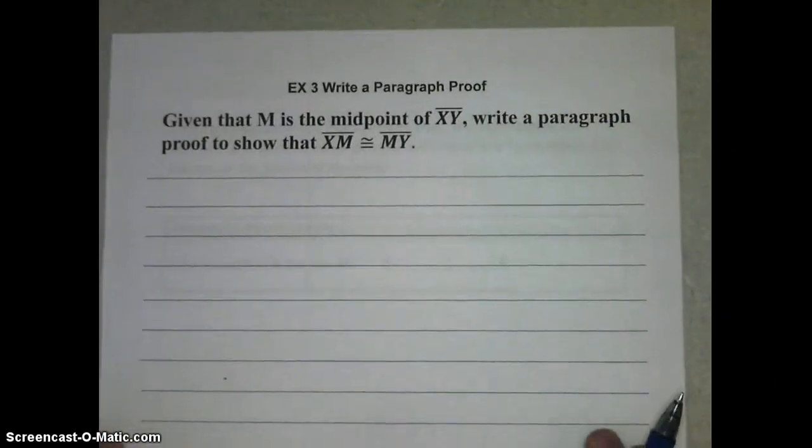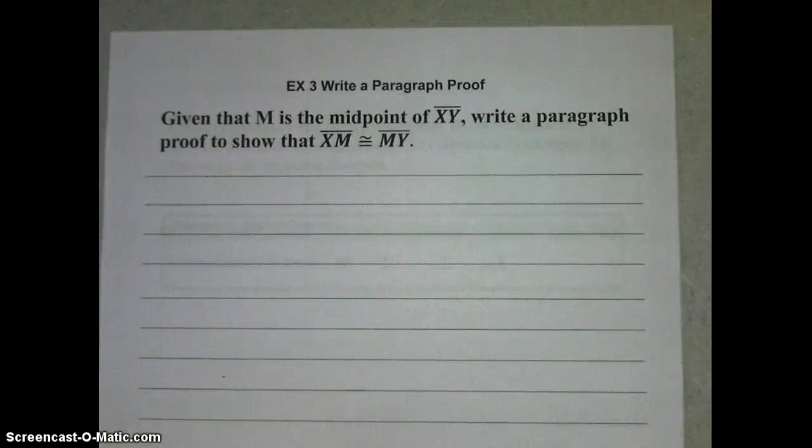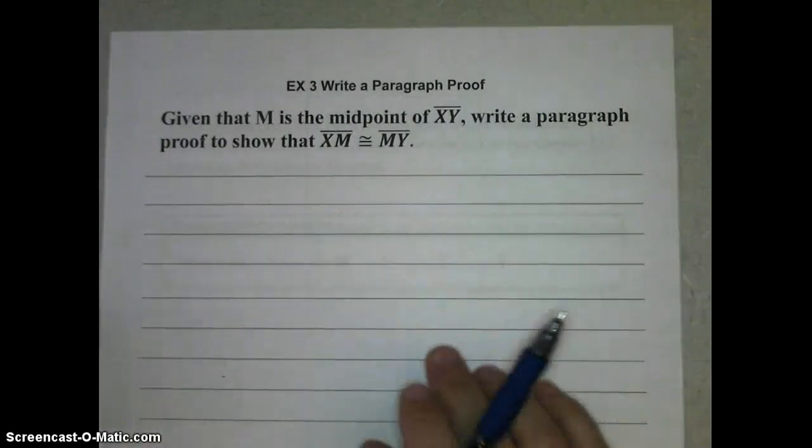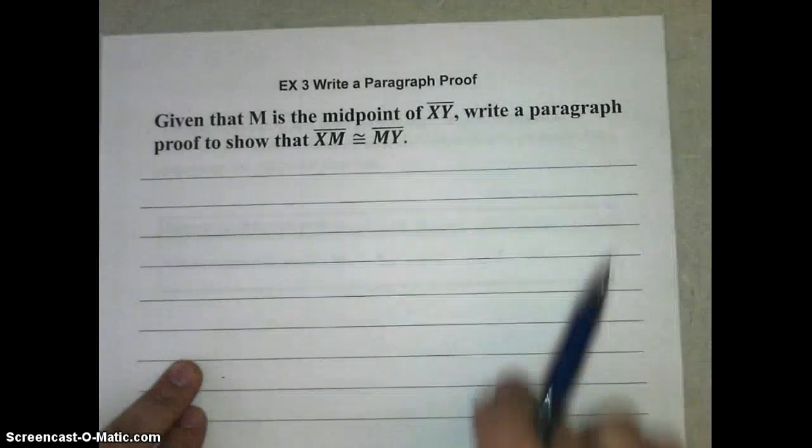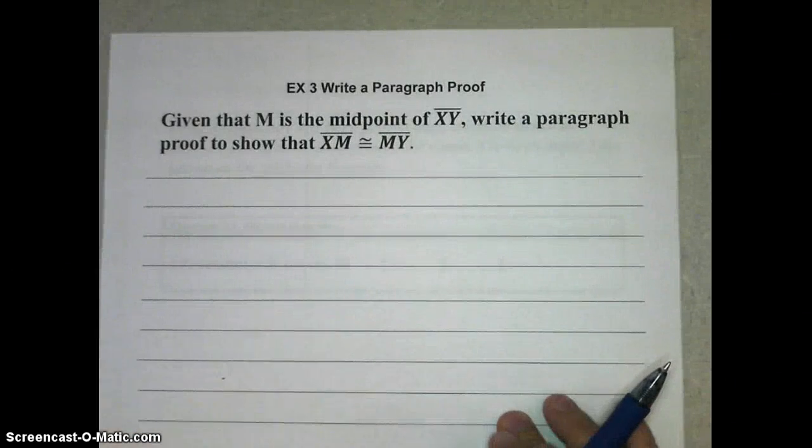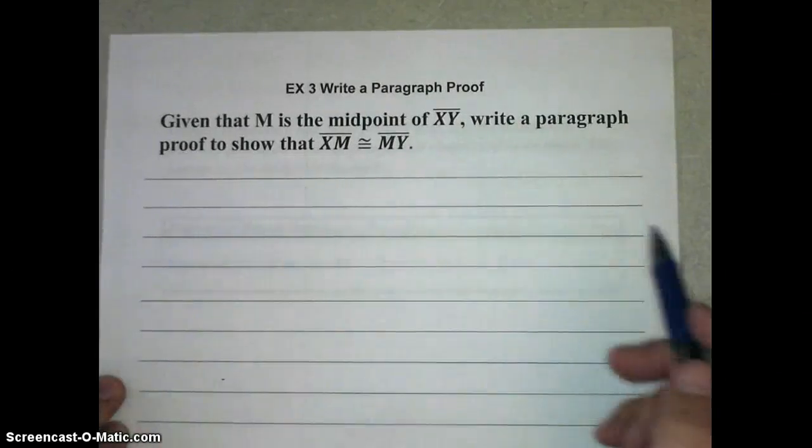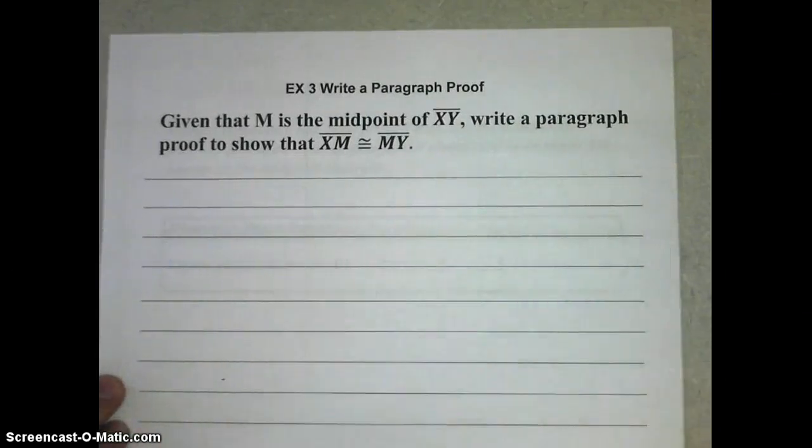In lesson 2.6, you learned how to put together two column proofs for algebraic proofs and geometric proofs, in which you list your statements on one side, reasons on the other. But a lot of times, it's a little bit easier just to write out your proof in paragraph form. So this is how we're going to do that.